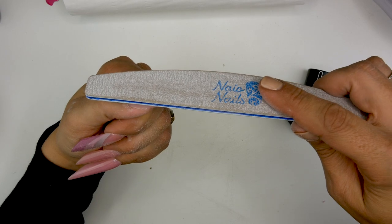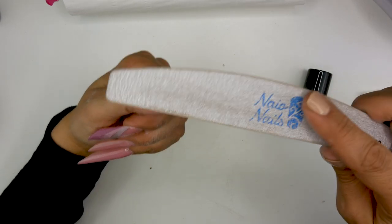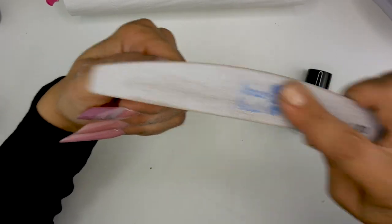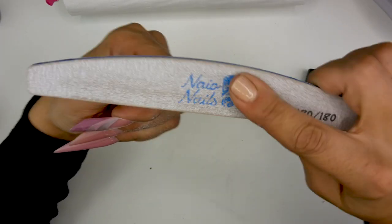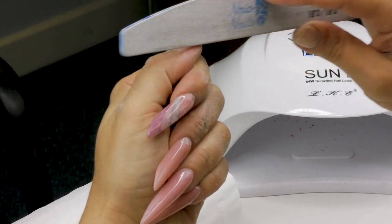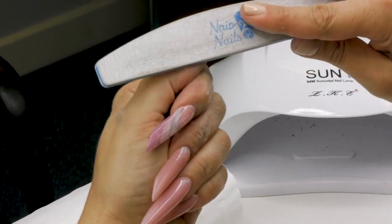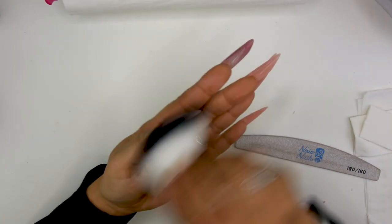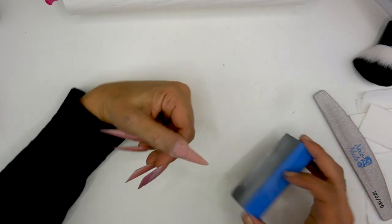So I place the file and I check that it's really straight and I file side to side. And when you're happy, you clean again and we're going to do the buffer.